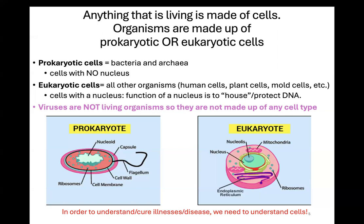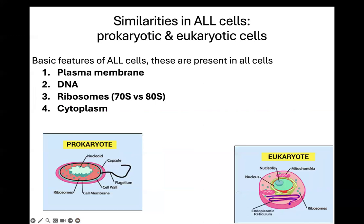Eukaryotic cells — like human cells and plant cells — do have a nucleus, and the purpose of a nucleus is to protect the DNA. This is so important to understanding how to cure illnesses, disease, and infection.